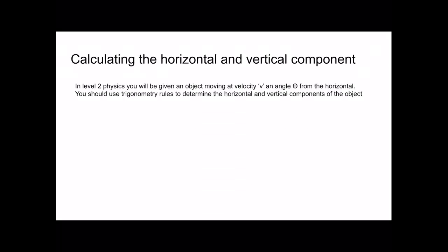Now we'll calculate the horizontal and vertical components. In level 2 physics, given an object moving at velocity V at angle theta from the horizontal, use trigonometry to determine the components. Vx equals cos θ times V, because Vx is the adjacent side — cosine is adjacent over hypotenuse. Similarly, Vy equals sin θ times V, because that's the opposite side — sine is opposite over hypotenuse.